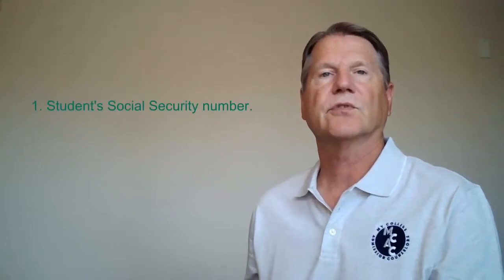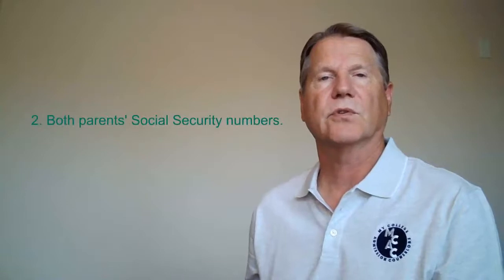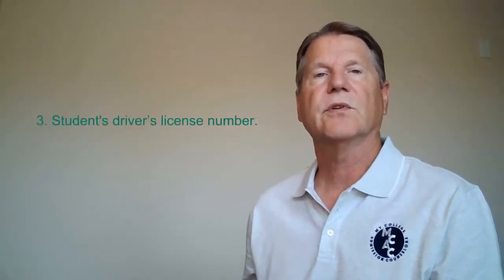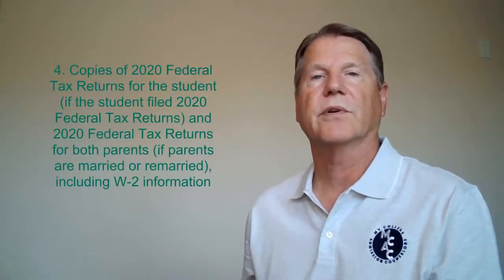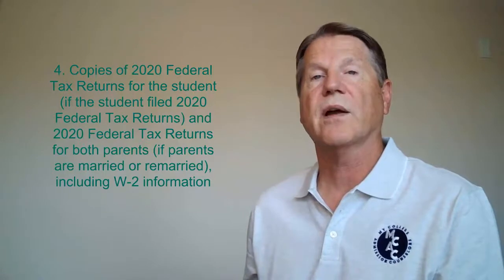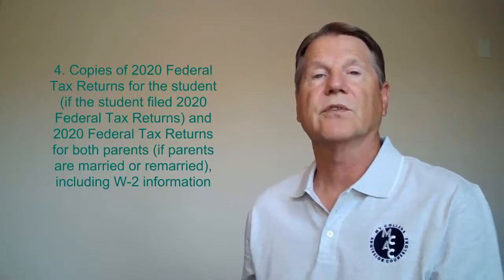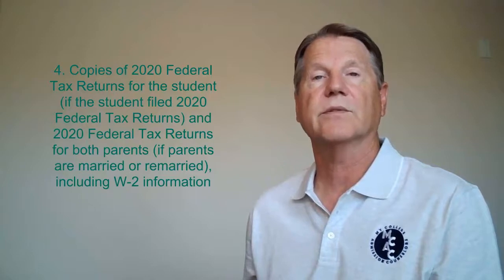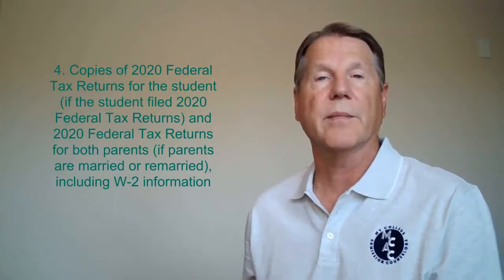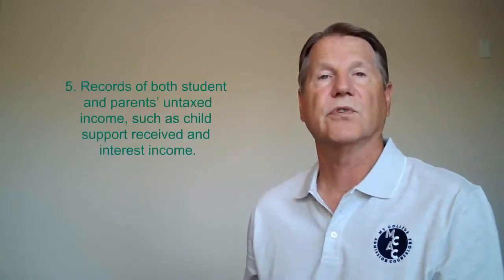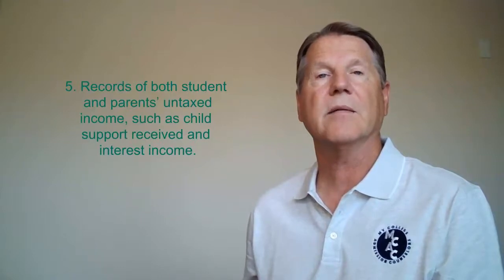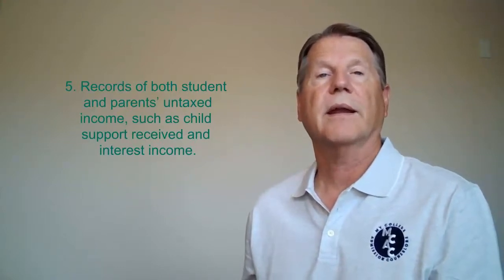Documents and information you should gather to prepare for completing the FAFSA include the following: the student's Social Security Number, both parents' Social Security Numbers, the student's driver's license number, copies of 2020 Federal Tax Returns for the student if the student filed them, and 2020 Federal Tax Returns for both parents if the parents are married or remarried, including W-2 information. You should also have records of both student and parents' untaxed income, such as child support and interest income.